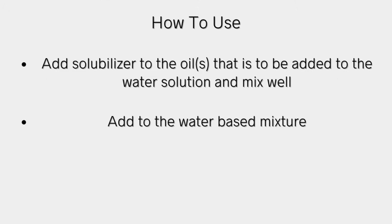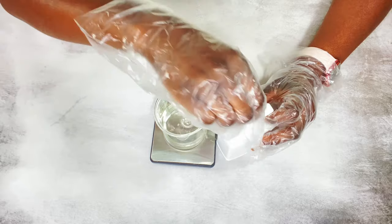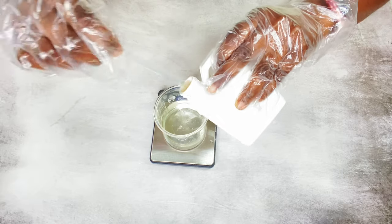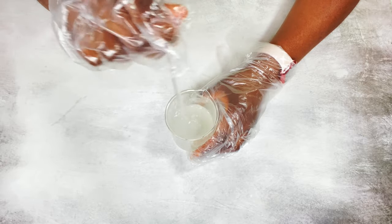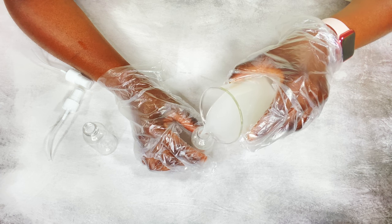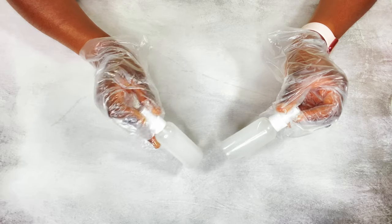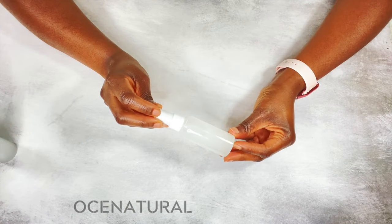Depending on which solubilizer you decide to use, just follow the supplier directions — they usually have it on their website when you purchase. For me, when I use the Polysugar Molse solubilizer, I add it directly into my water mixture since it is water soluble. The usage rate ranges from two to eight percent depending on the type of product you are making. There was some cloudiness after I finished, but after about 24 to 48 hours my product had cleared up.